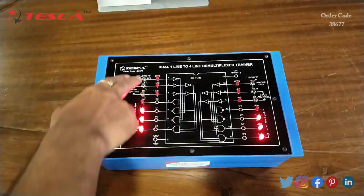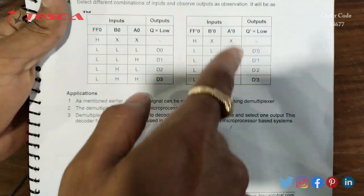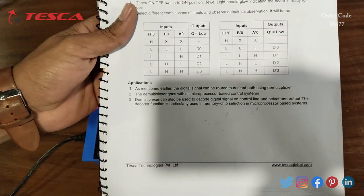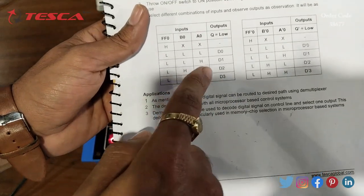This is the truth table for this side and this is the truth table for this side. Now we will verify one by one. Let's take this truth table first.